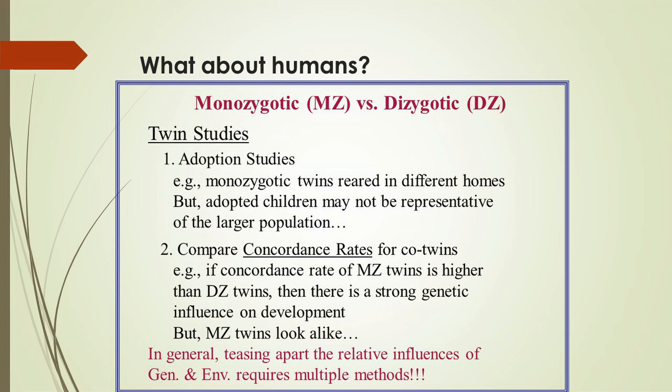So how do we go about teasing apart the relative influence of genetic inheritance and environment on the development of behavior in humans? One way to do this is to use twin studies.